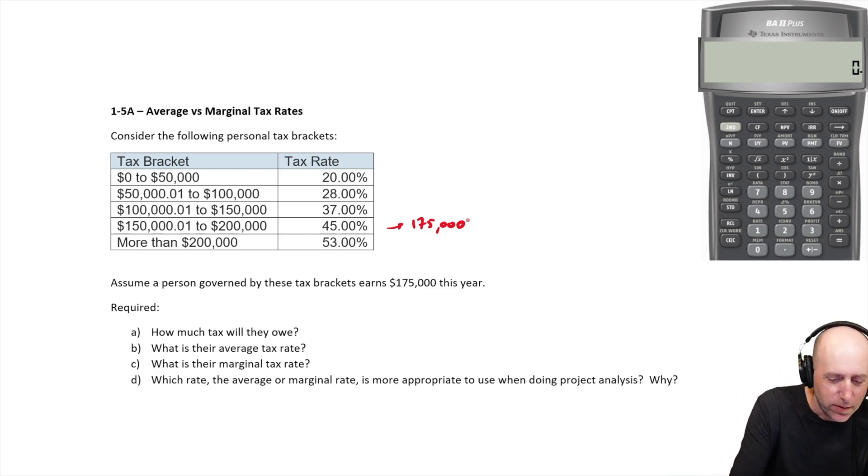For our first $50,000 we earn, we pay 20%. For our next 50, 28%. For our next 50, 37%. And so only 25,000 of our $175,000, the last 25,000 is taxed at 45%. So it's $50,000 at 20%.